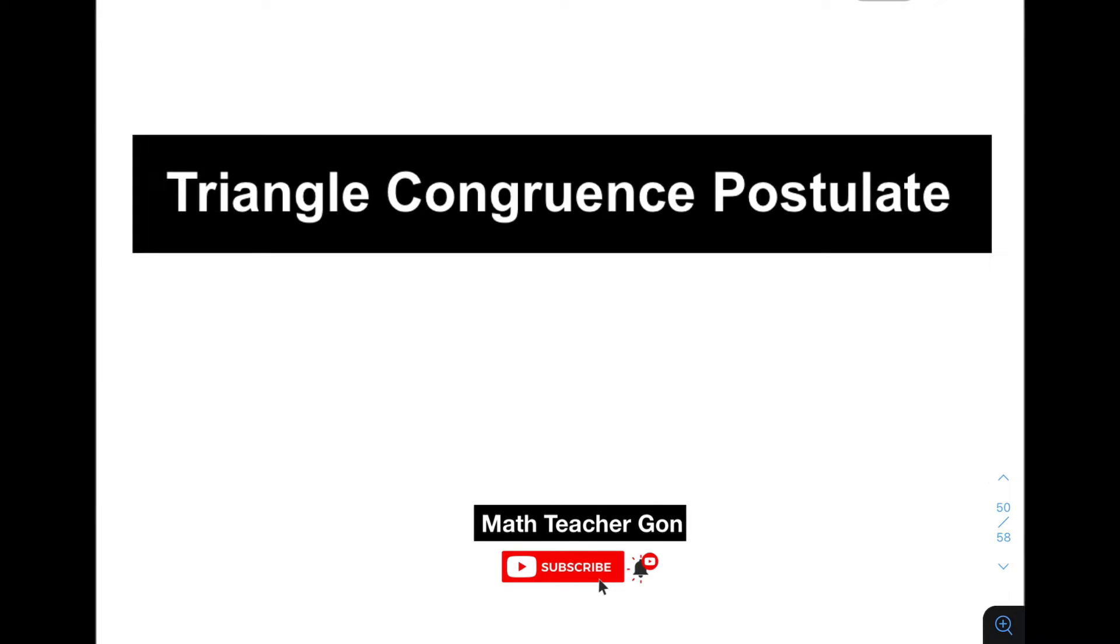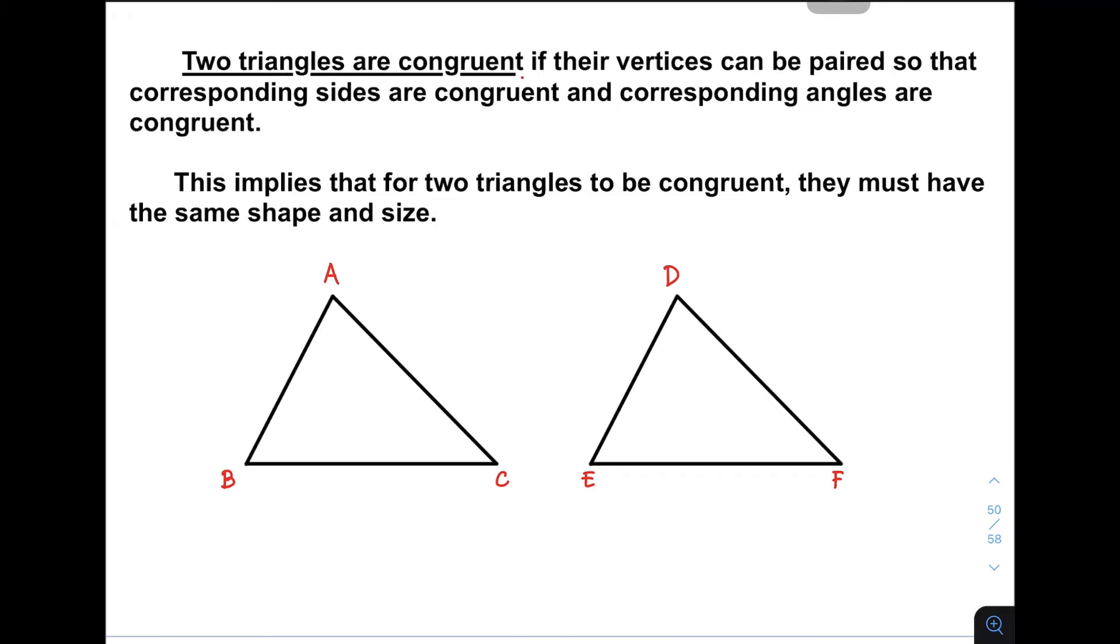Let's do this topic. Two triangles are said to be congruent if their vertices can be paired so that corresponding sides are congruent and corresponding angles are congruent. They must have the same size for their sides and the same size for their corresponding angles. We have here two different triangles. For us to say that these two triangles are congruent, they must have the same shape and same size.